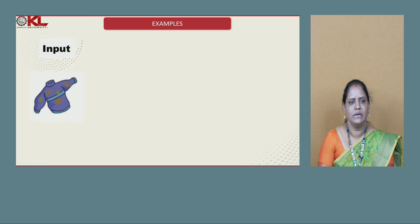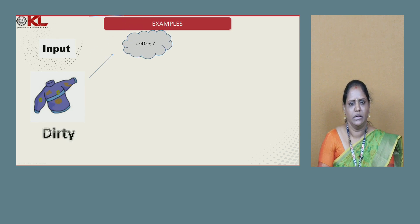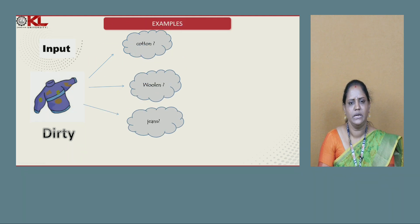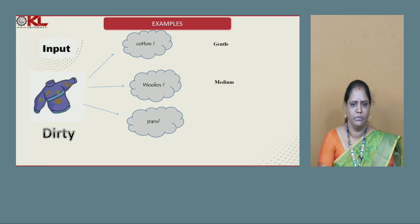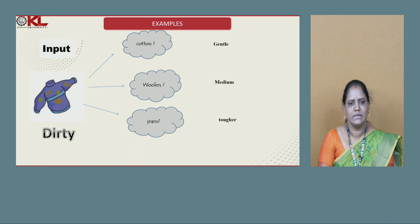Here is a general example. I want to wash a cloth that is dirty. The cloth can be cotton type, woolen type, or jeans type. Based on the cloth type, I select the wash type: if the cloth is cotton, we go with a gentle wash; if it is woolen, we go with a medium wash; and if it is jeans, we go with a tougher wash. This is a general example of selection or decision making.